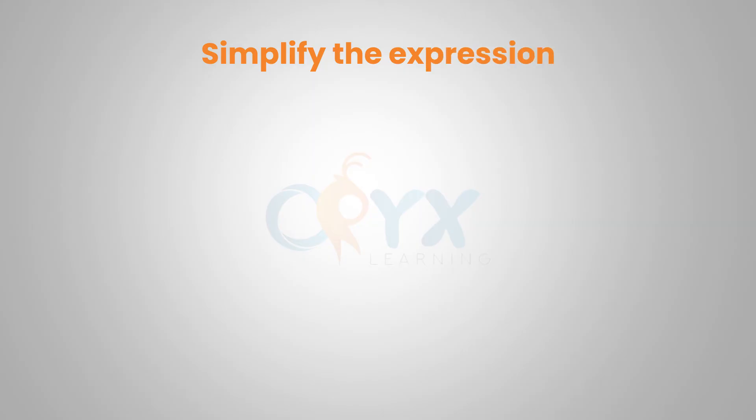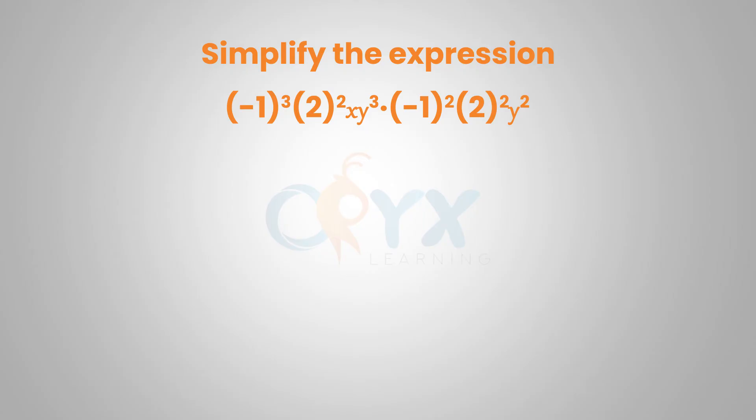Next example: simplify the expression negative 1 to the 3rd times 2 squared times xy to the 3rd times negative 1 squared, 2 squared, y squared. Same idea — we can multiply all of the coefficients together, and when multiplying like bases, add the exponents. It's best to rewrite these with the coefficients together, the x's together, and the y's together.